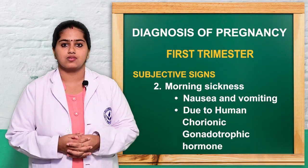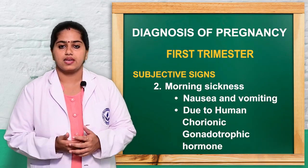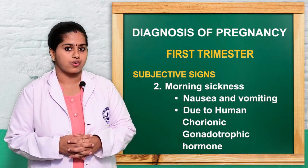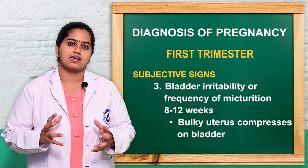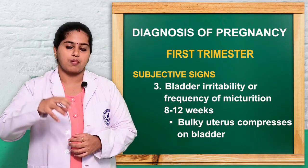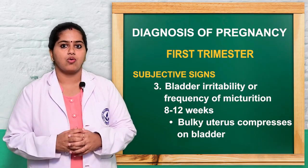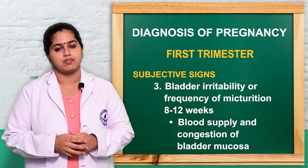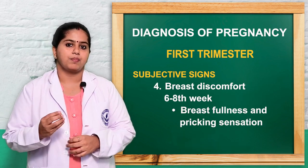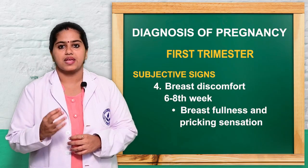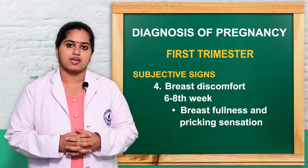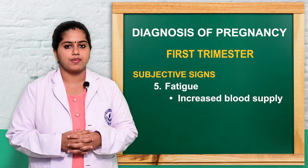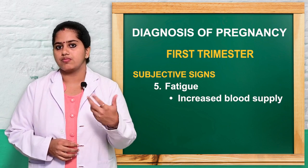The second subjective symptom is nausea and vomiting, known as morning sickness, occurring early upon waking due to the hormone human chorionic gonadotrophin (HCG). Third is bladder irritability — as the uterus develops, it compresses the bladder and increases blood supply to the bladder region, causing urinary symptoms. Breast changes such as tingling and pricking sensation occur, similar to premenstrual symptoms. Fatigue is also present due to increased blood supply to the uterus and fetal growth.